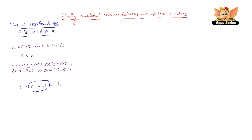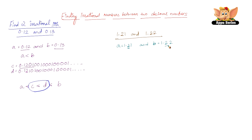Let us take another example and find two irrational numbers between 1.21 and 1.22. Here again, let A equal 1.21 and B equal 1.22. We can clearly see that the first decimal digits are the same, and the second decimal digit is 1 in A and 2 in B, so we can find numbers between them.